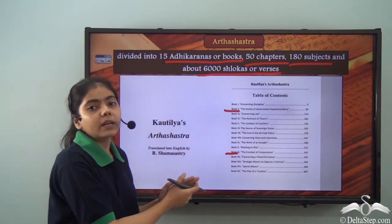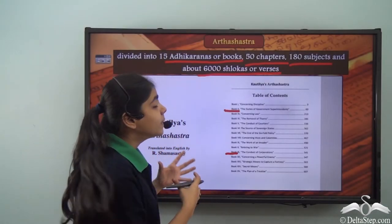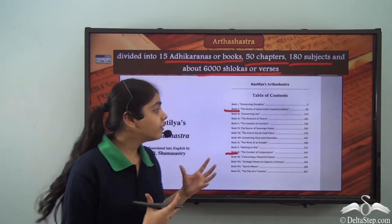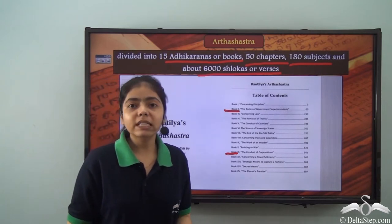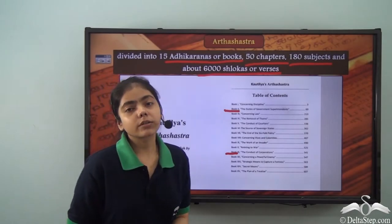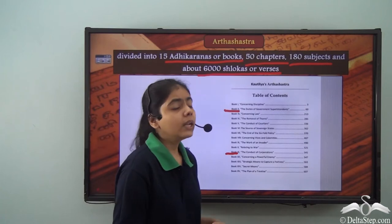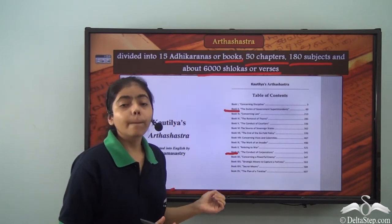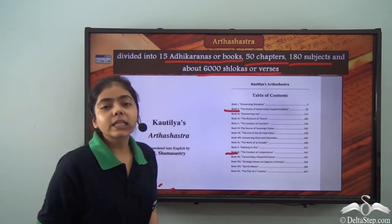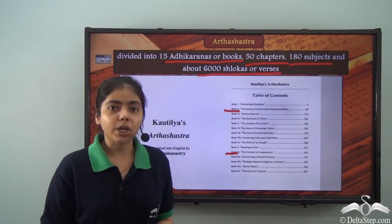From the Arthashastra we get to know about administration, criminal and civil laws, ethics, military strategies, the espionage system, and other aspects that the king must be mindful of. This book was written in Sanskrit. However, one must be mindful that whatever is written in this book may not have been the reality of the past, because it represents an ideal situation. So historians have to be very careful when dealing with the Arthashastra.